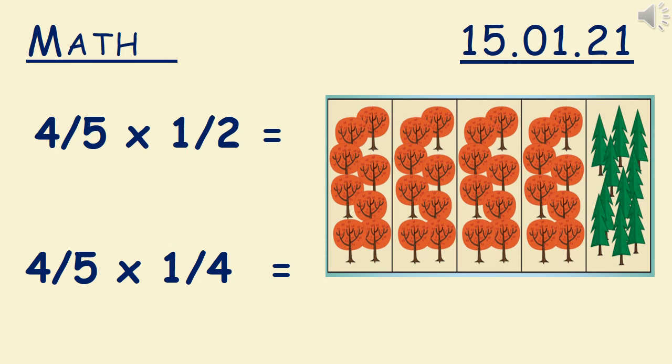So you should have the calculations 4/5 × 1/2, which is how many beech trees, and 4/5 × 1/4, which will be how many oak trees.